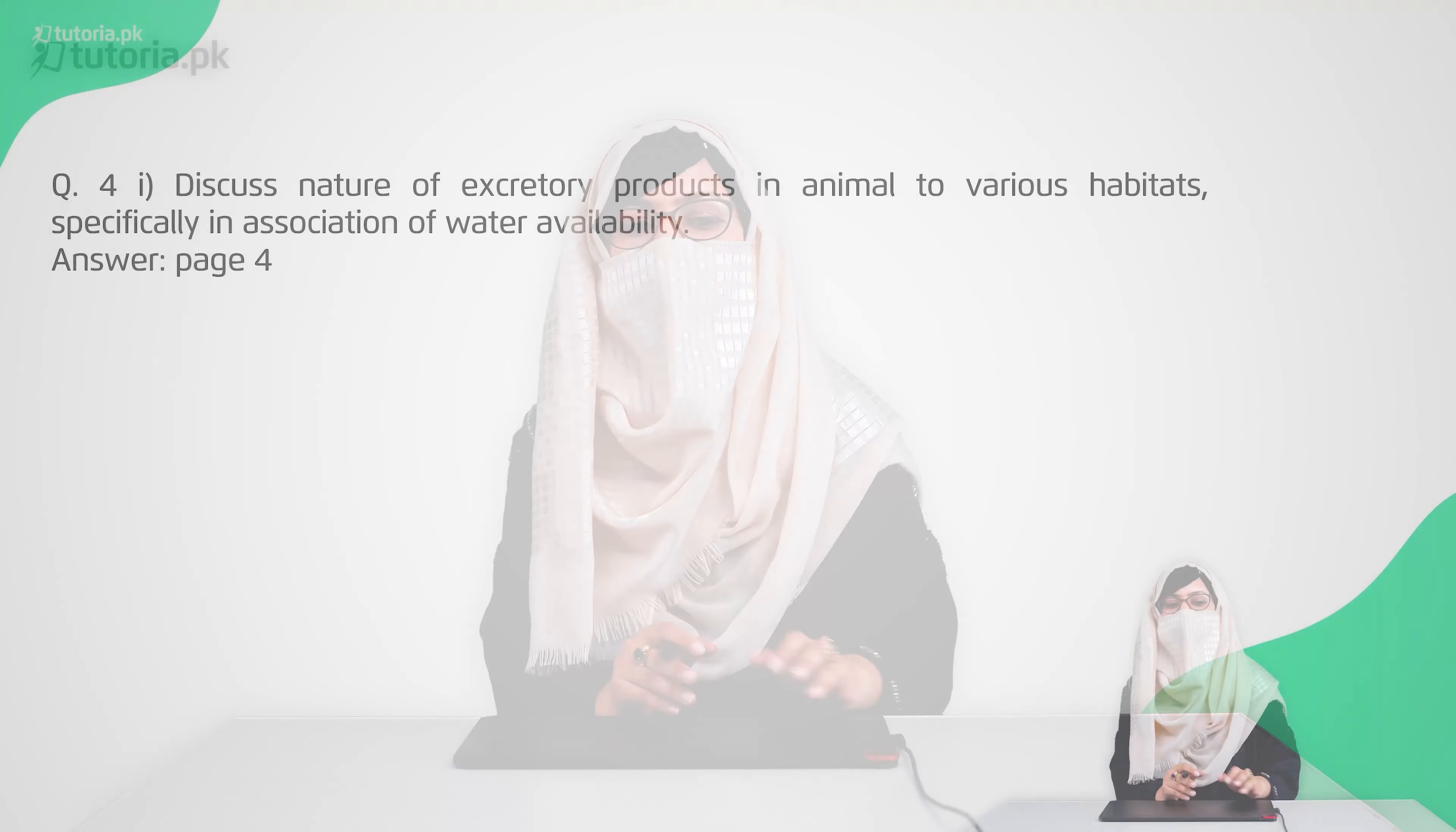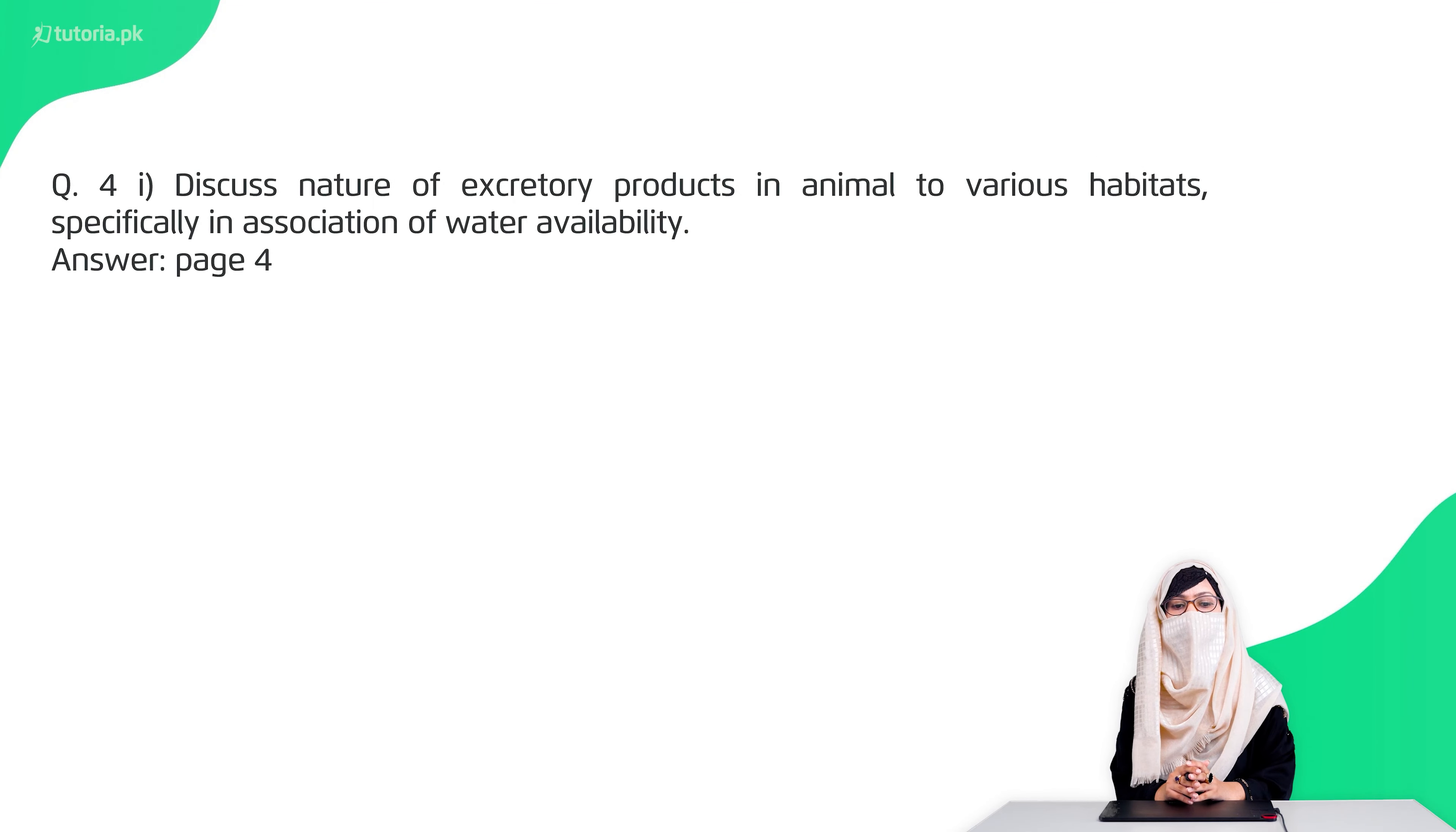Now we will discuss the last part of your chapter, that is the long questions. So the first long question is, discuss the nature of the excretory products in animals to various habitats, specifically associated with the water availability. They have asked about excretory products, so first you have to give the definition of excretory products.